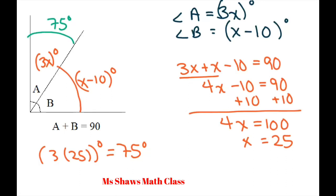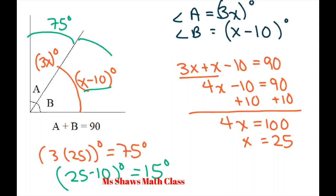And for angle B: 25 minus 10 degrees equals 15 degrees. So angle B is 15 degrees. Check: 15 plus 75 equals 90.